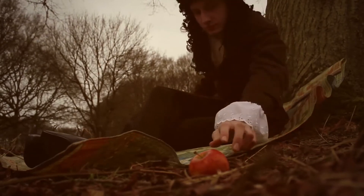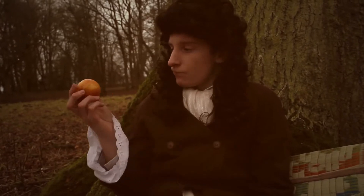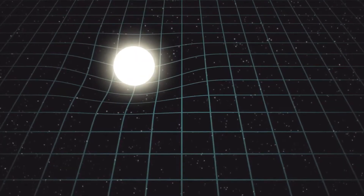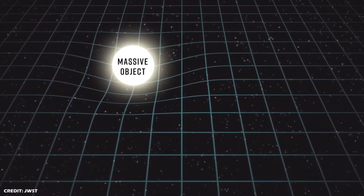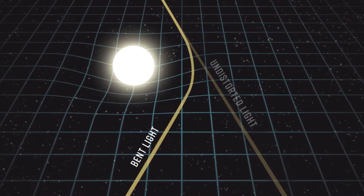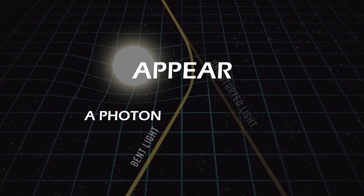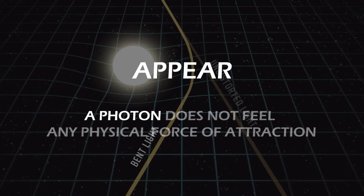Like how an apple under the influence of Earth's gravity falls to the Earth, a photon traveling through empty space close to a massive object like a star or a galaxy appears to be attracted to it. The reason why I use the word 'appear' is because a photon traveling in the vicinity of a massive object, say a star, does not feel any physical force of attraction that pulls it towards the star.